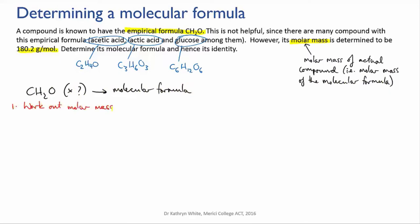Well, let's work out the molar mass of the empirical formula to start off with. That's 12.01, one carbon, plus 2 times 1.008, that's two hydrogens, plus 15.999 for the oxygen, which gives us 30.025 grams per mole.